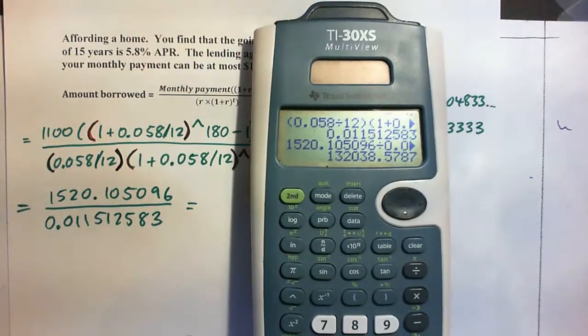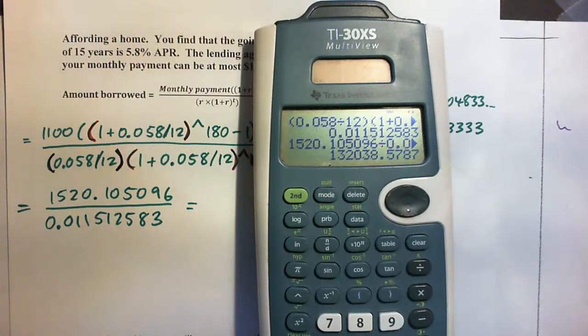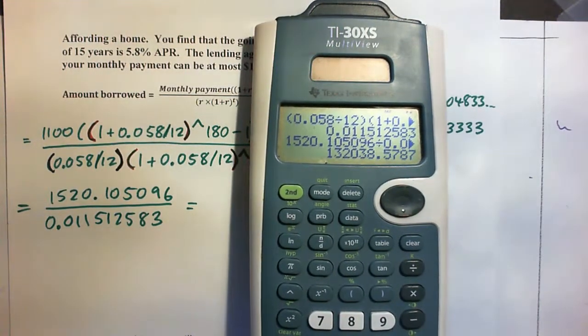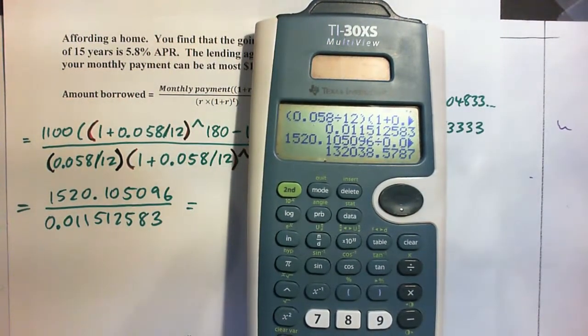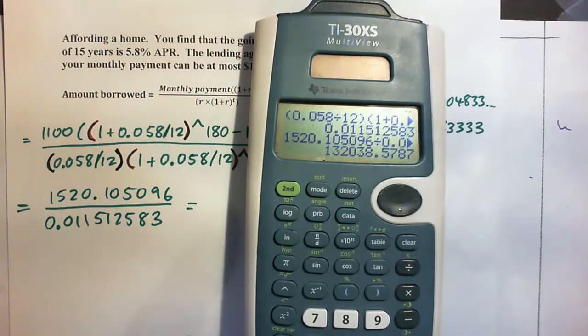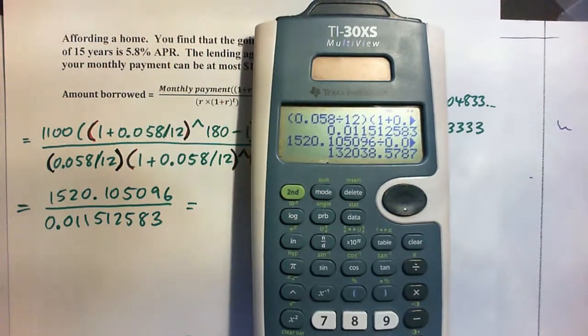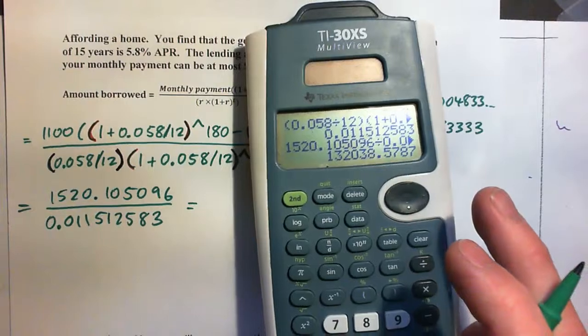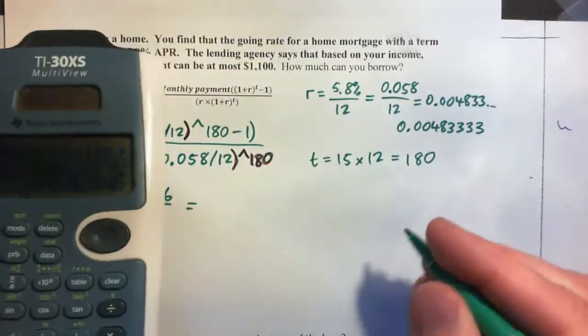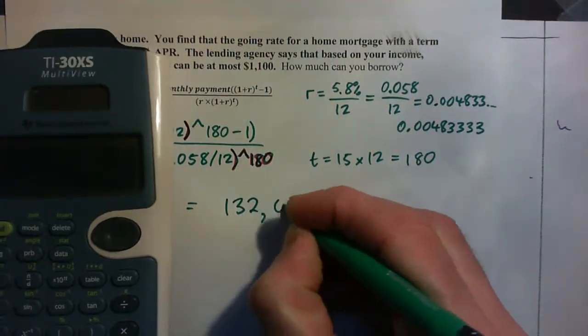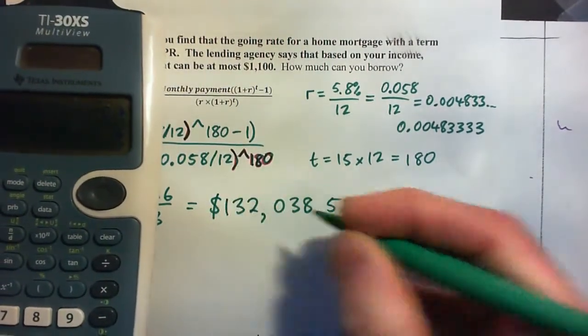What are we dealing with? What are our units of measurement? Dollars. The question might say round to the nearest dollar. Well, it didn't say. So if you're dealing with money, you could round to the nearest dollar, but I think rounding to the nearest cent is the safest thing to do. So let's round this guy to the nearest cent: $132,038.58.